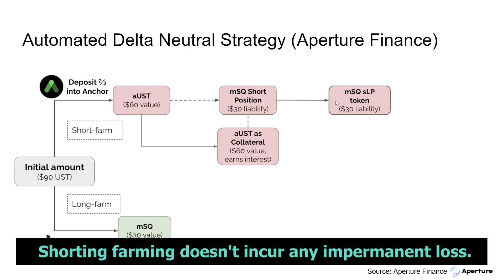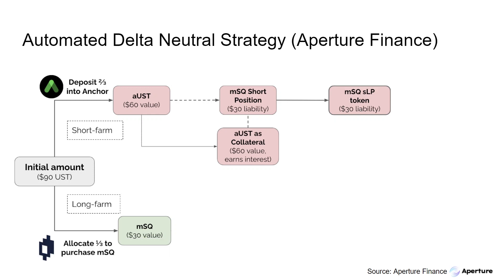It's important to keep in mind that if I'm short farming in this way, I am not exposed to impermanent loss. The collateral value here is 60 UST and I'm able to borrow $30 worth of mSQUARE shares. The collateral ratio here is 200%, meaning the value of my collateral is twice the value of the borrowed shares — just a safe default that Mirror Protocol uses. At this point in the strategy, this is a pure delta-neutral strategy, meaning I absolutely don't care how the mSQUARE shares move in price.